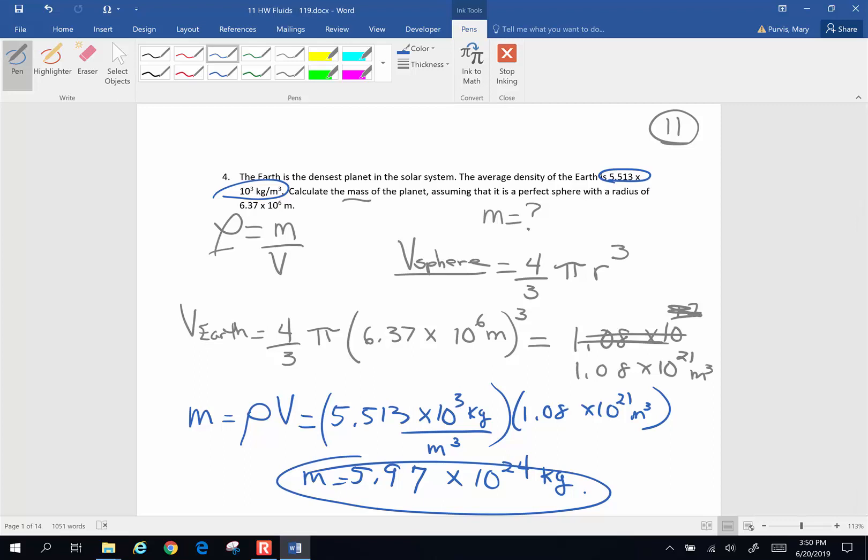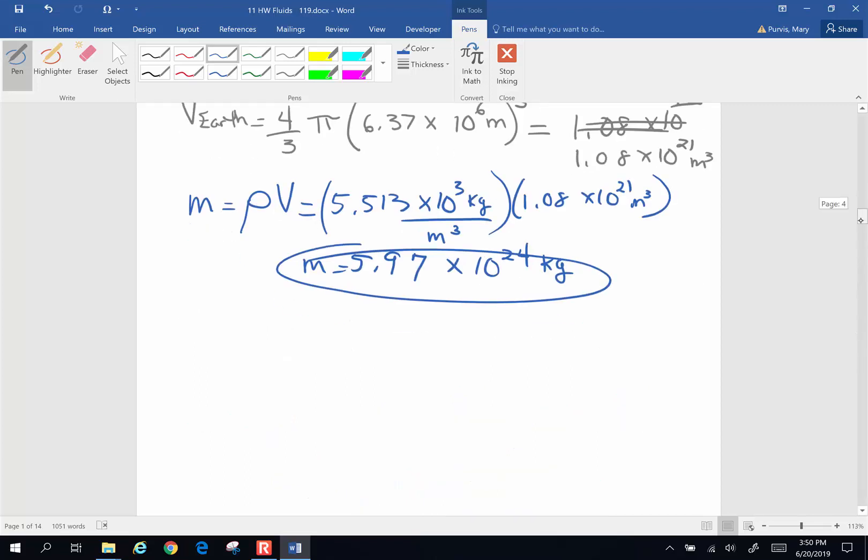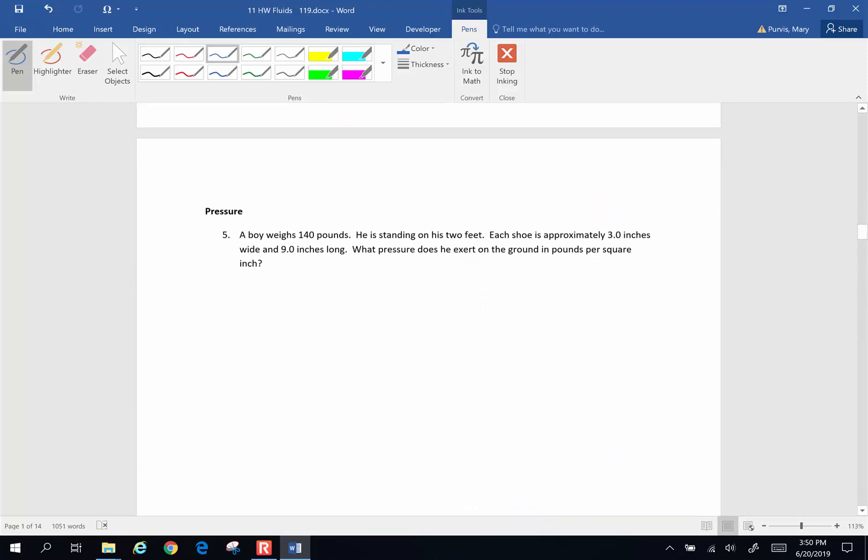We're going to do another one. A boy weighs 140 pounds. He's standing on his two feet. Each shoe is approximately 3 inches wide and 9 inches long. What pressure does he exert on the ground in pounds per square inch? So the area of each foot is 3 inches by 9 inches, 3 times 9 is 27 inches squared. He has two feet, so I'm going to multiply that by 2, so the total area that he is touching the ground with is going to be 54 square inches.